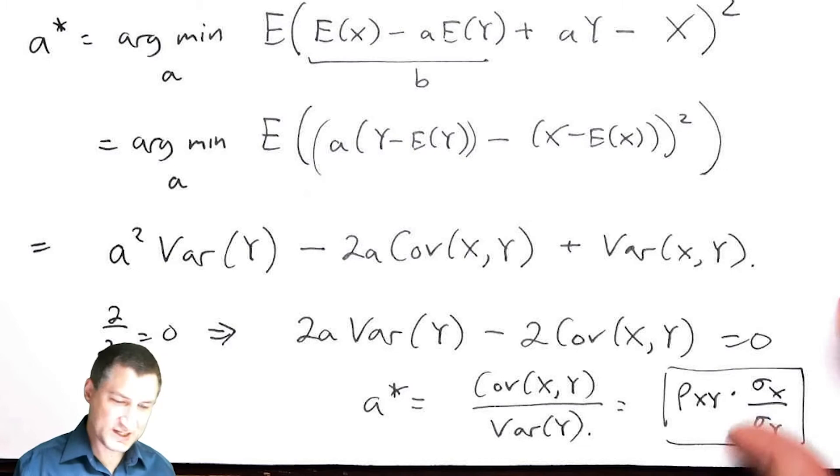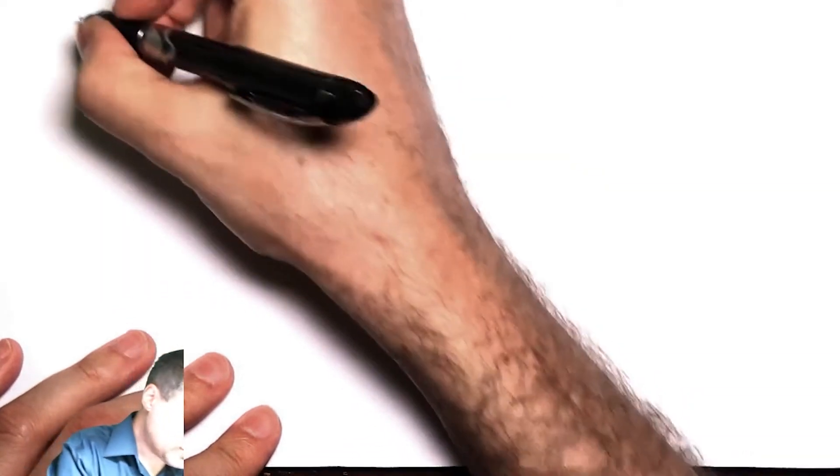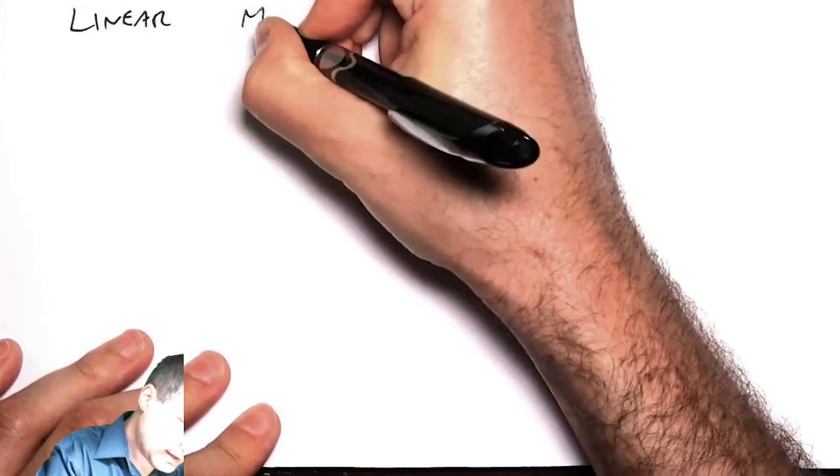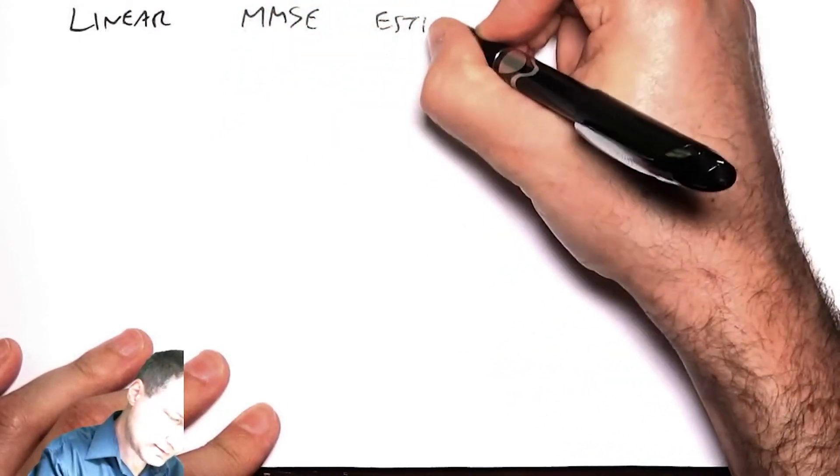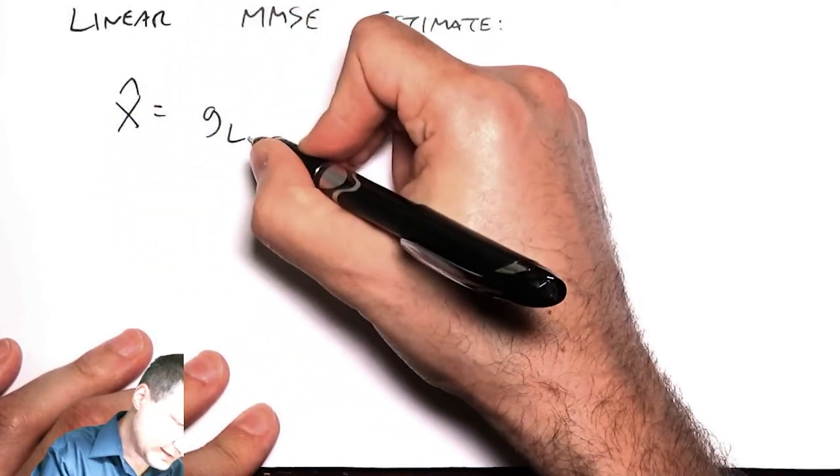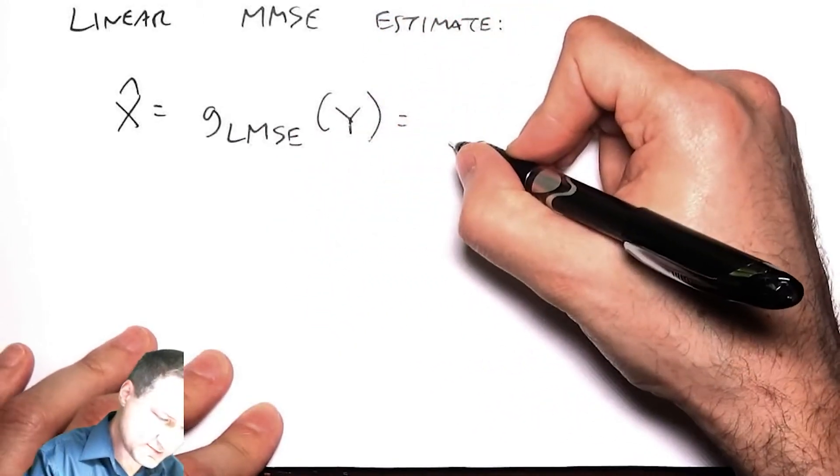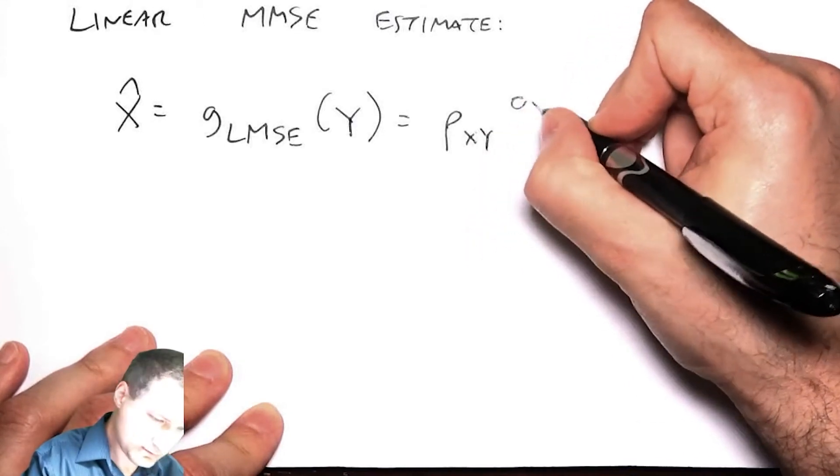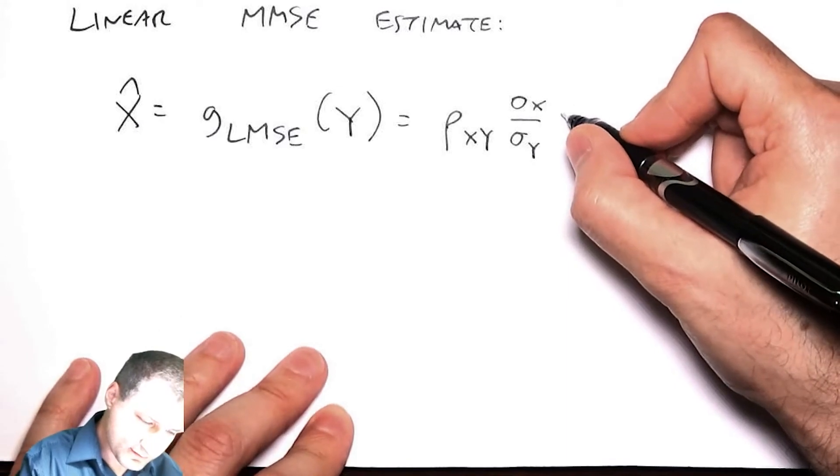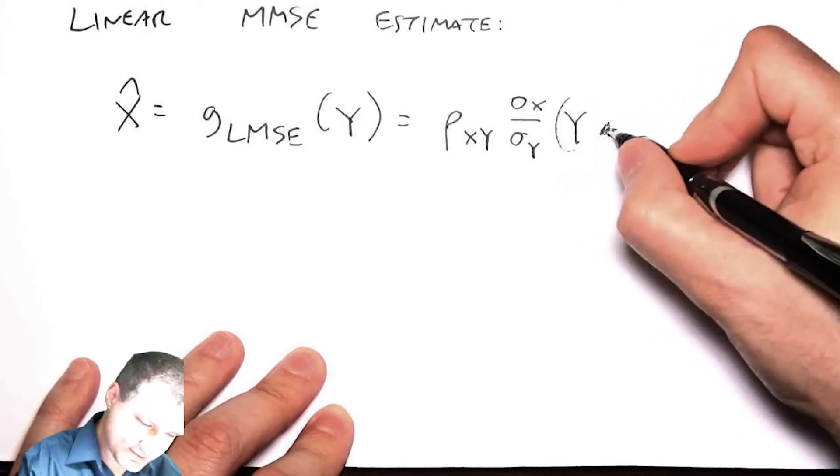So what does this tell me? This tells me that now I have an approximation to the MMSE which is linear. So I would call this the Linear MMSE estimate, which I could call g_LMSE(Y). This is the a part, and then I would have the b part. And actually I'm going to put this all together into a slightly nicer looking form.